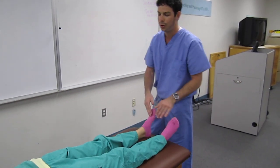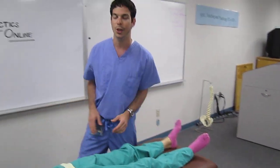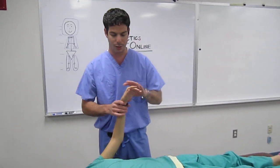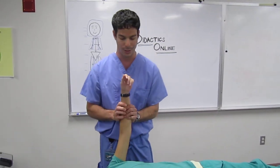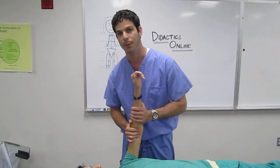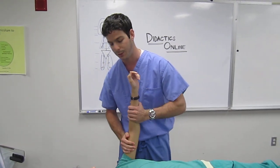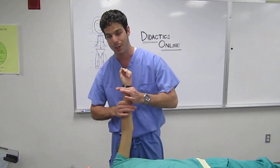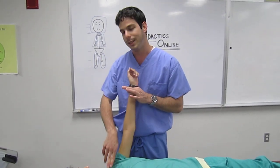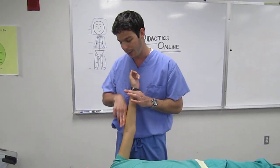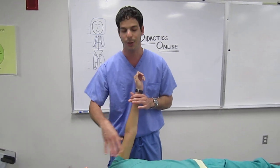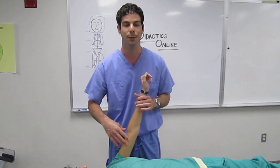Another thing you can do anywhere peripherally is pétrissage and effleurage. Pétrissage is essentially kneading — kneading that soft tissue and lymphatics in the peripheral distal extremities. Effleurage is milking. You're always aiming towards that thoracic inlet, so in this case we're heading up the arm, and we've already freed up the thoracic area and know that we have a pretty good flow going on in there.